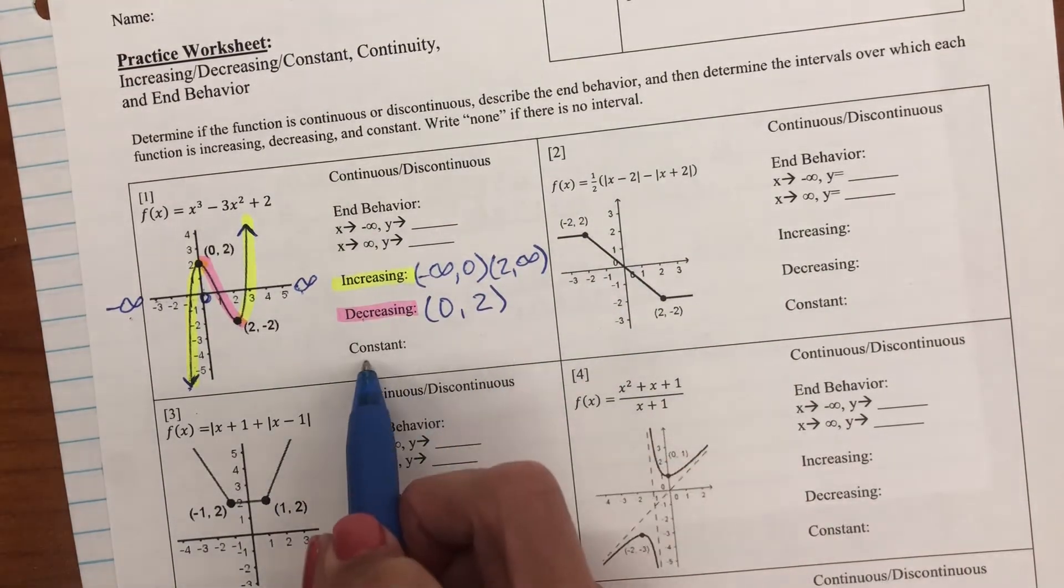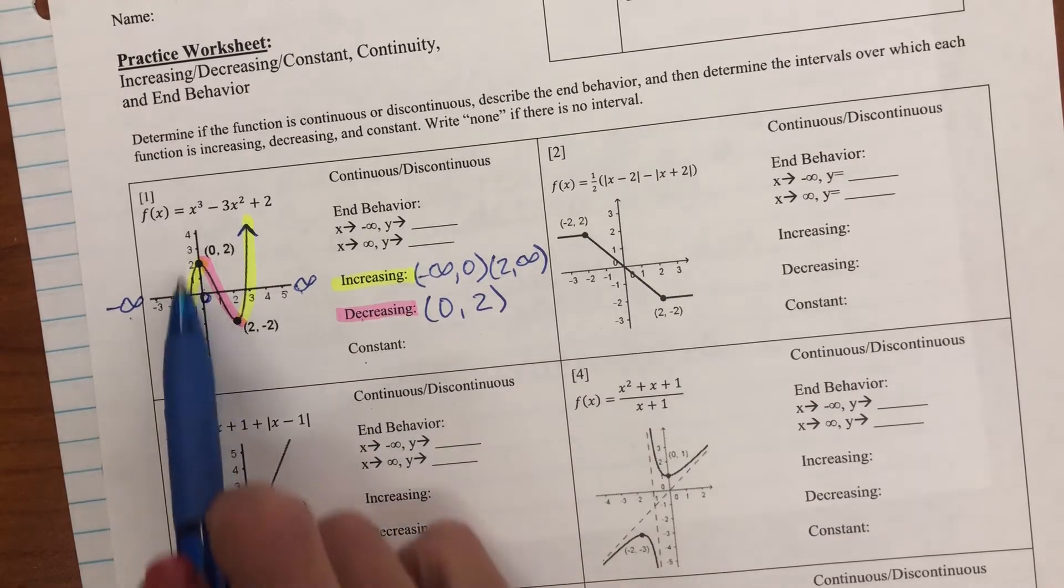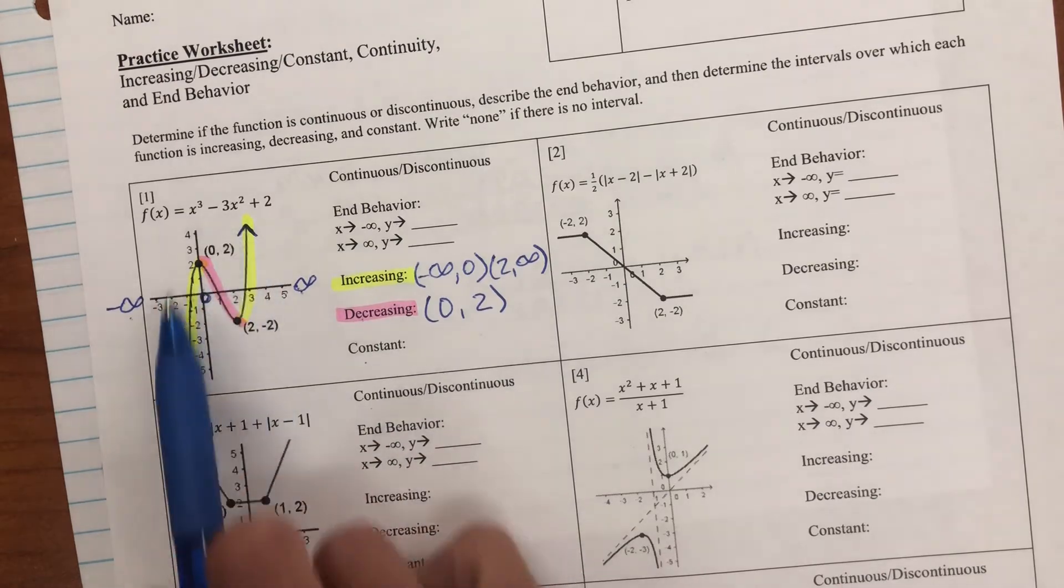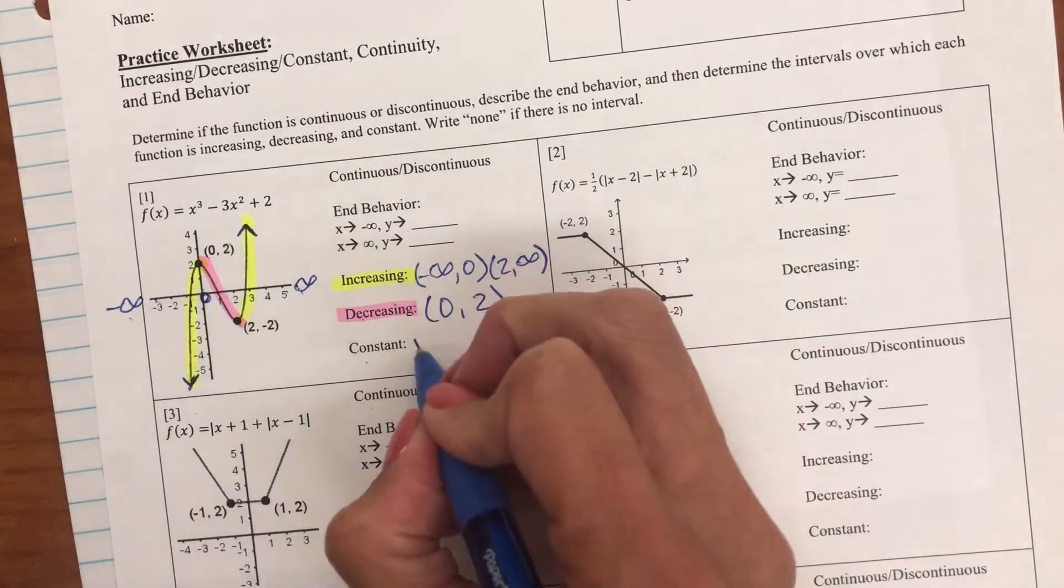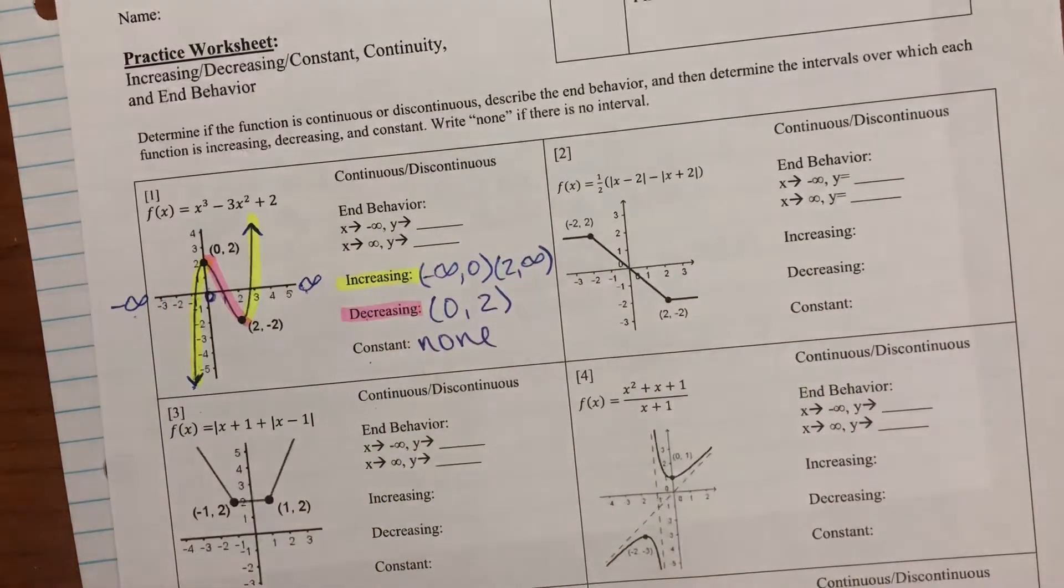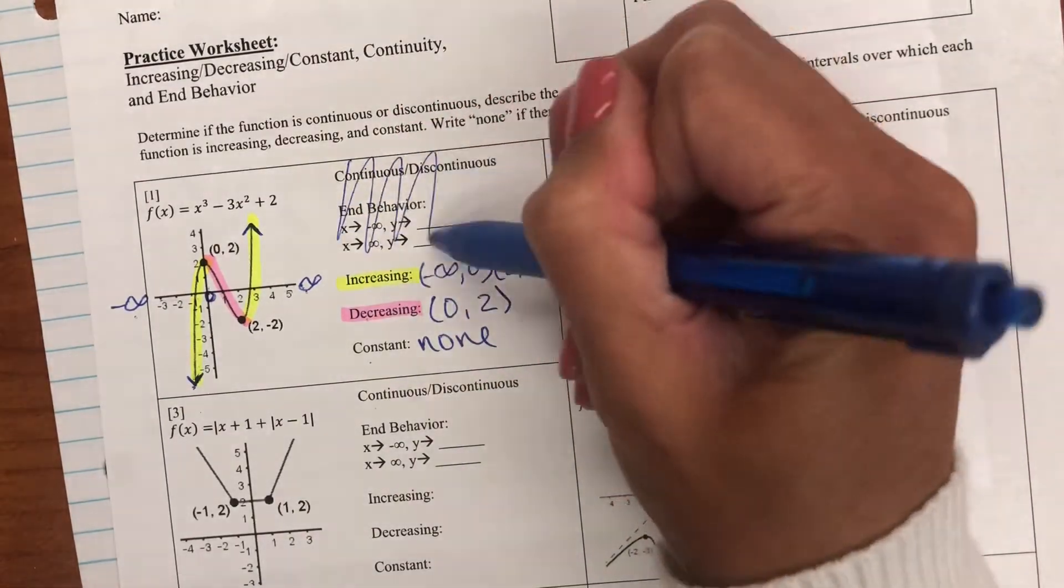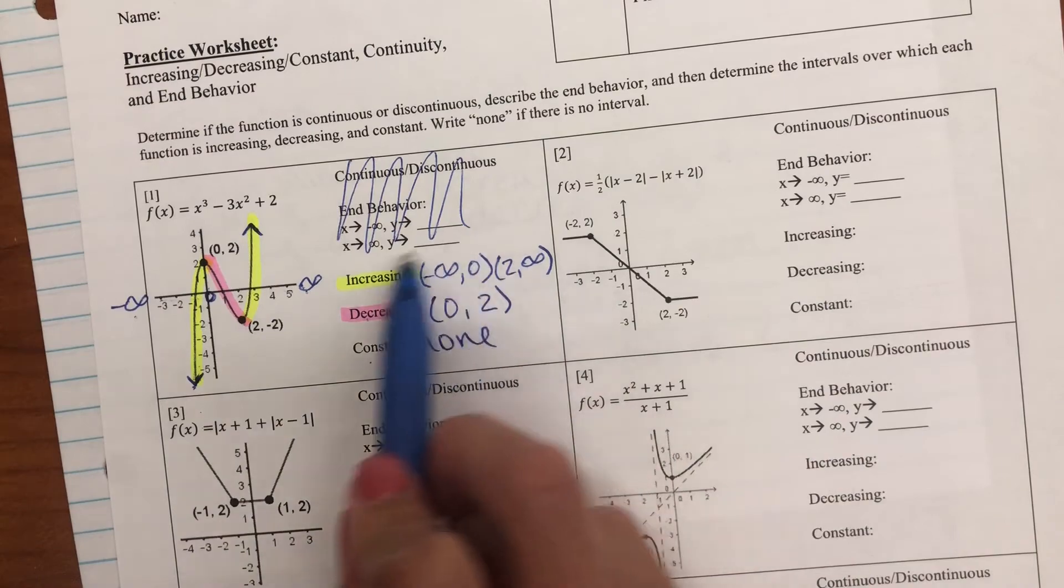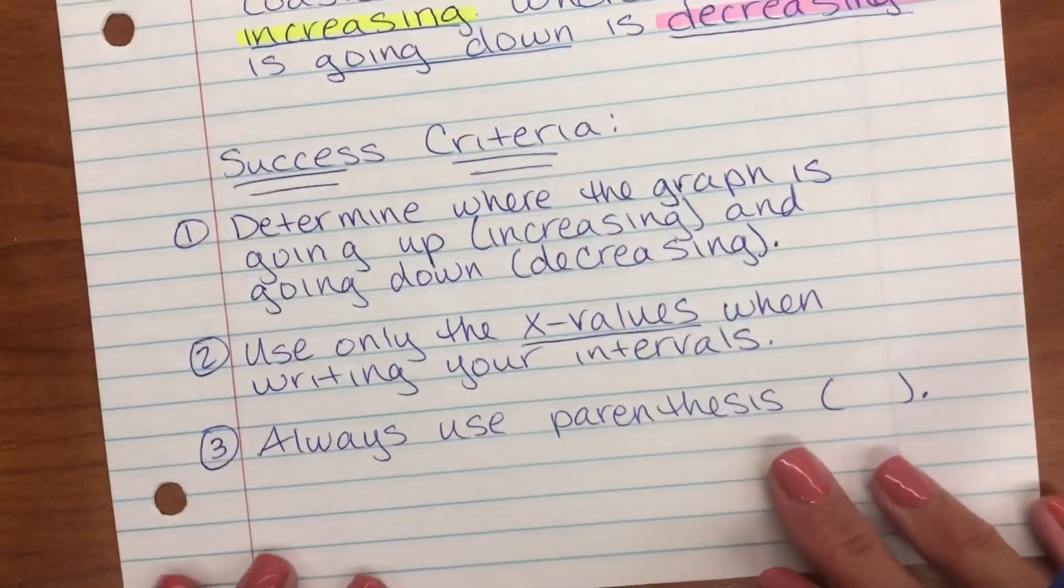And constant. Constant is when the graph is neither going up or down. It's just going straight across. And I don't have that happening in this graph. That would be none. Don't worry about this. You don't need to do anything with that. I'm just concerned with this for today.